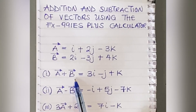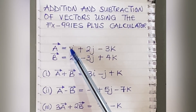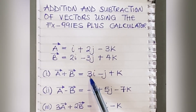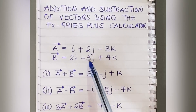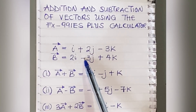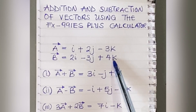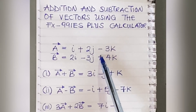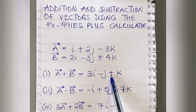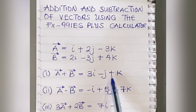Question one: A plus B. When adding vectors, we only add their coefficients. The coefficient of i is 1, so 1 plus 2 gives us 3i. For j: 2 plus minus 3 equals minus 1, so minus j. For k: minus 3 plus 4 gives plus 1, so plus k. Therefore A plus B equals 3i minus j plus k.